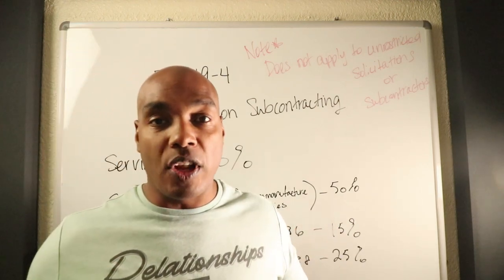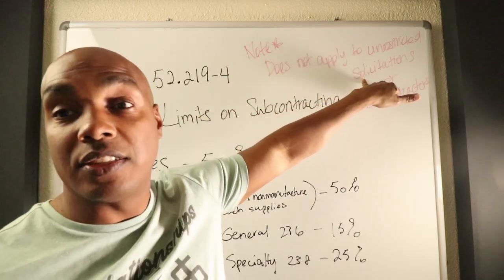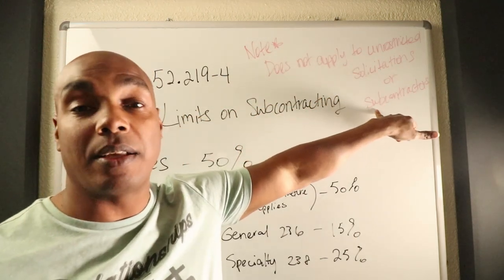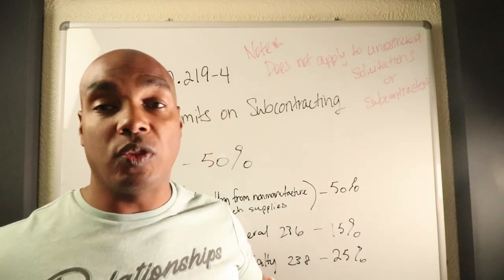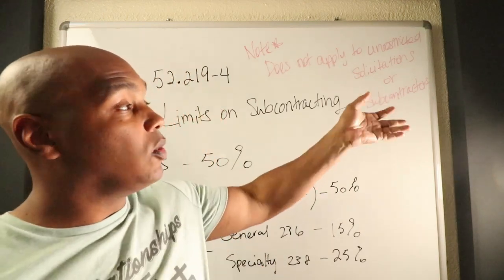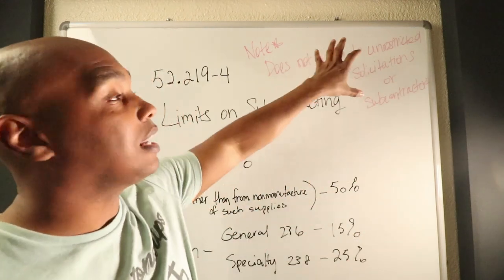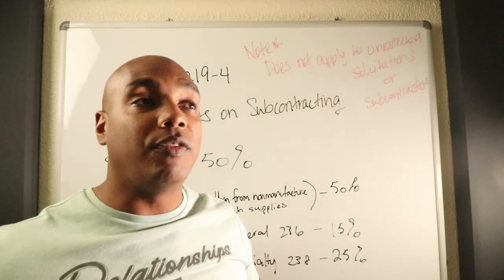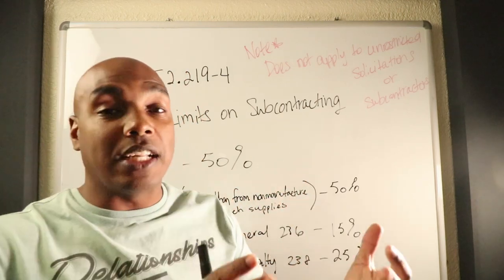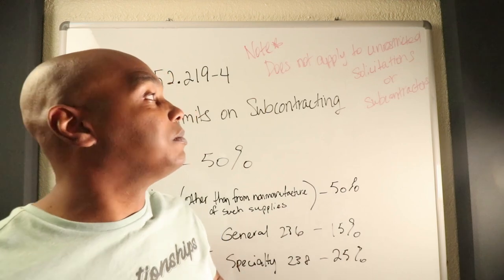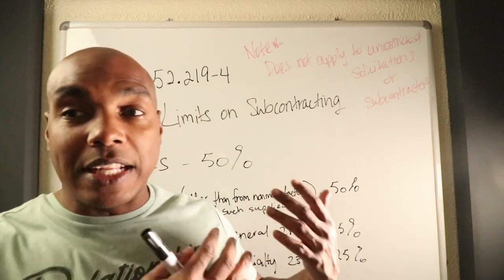This is the part of the regulations that talks about how you're supposed to handle performing a certain percentage of work when you get a contract from the government. Let's note that this does not apply to unrestricted solicitations nor to some contractors. It only applies if you are a prime contractor on some sort of set-aside type of project, whether it be small business, women-owned, 8a, hub zone, whatever the case may be.